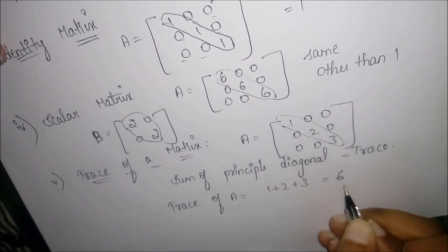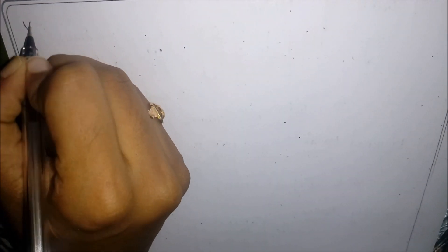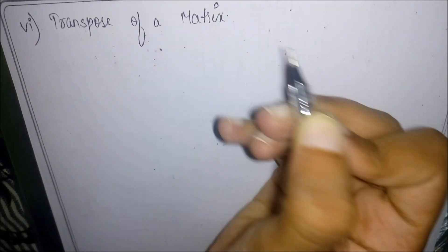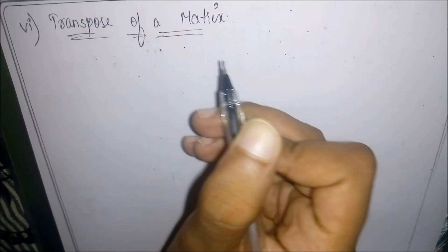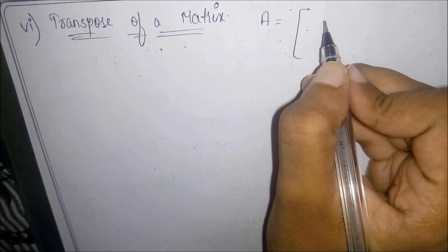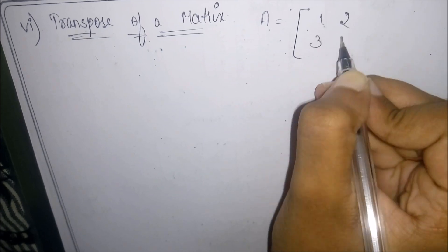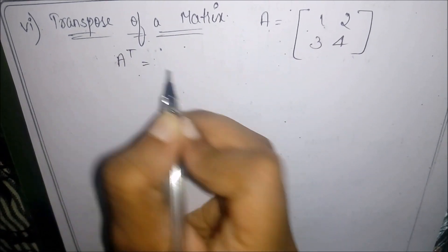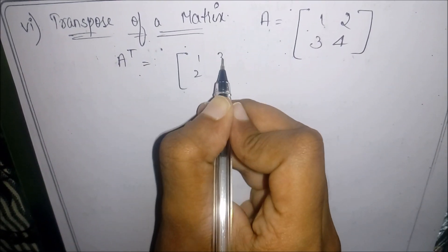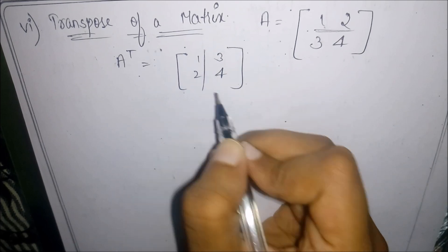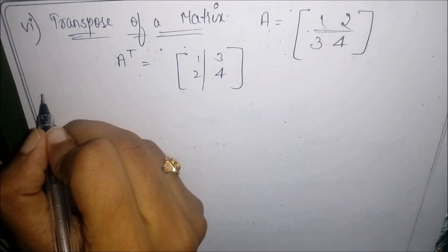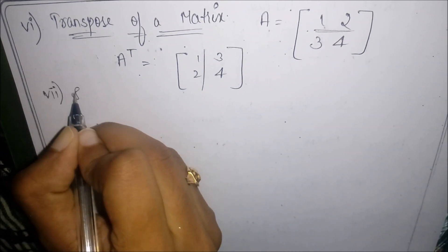The next topic is the transpose of a matrix. The transpose of matrix A is obtained by changing its rows into columns or columns into rows. In the given matrix, row one becomes the first column, and so on — that is called the transpose of a matrix.